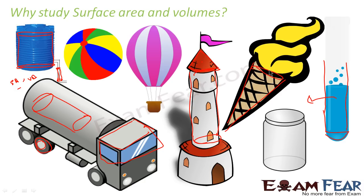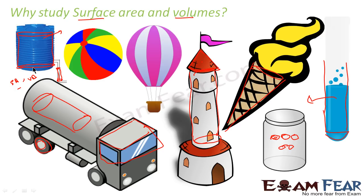A jar used at home — if you want to find how many small cookies can fit in it, you find the volume of the jar and the volume of one cookie, then divide. So in real life, you find surface area to know the cost of painting, and you find volume to know how many items fit inside a container. That is why we need surface area and volume.